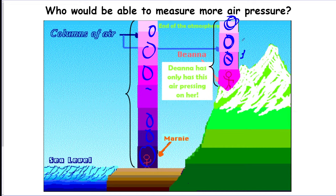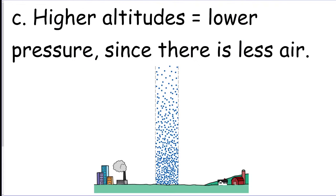So we could say that Deanna has less air on top of her, and Marnie has more. So Deanna is experiencing less air pressure at the higher altitude, and Marnie is experiencing more air pressure down by sea level. So based on that, we could say higher altitudes have lower air pressure because there's less air above you.